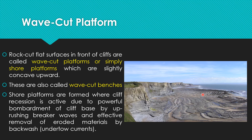The wave cut platform is formed as the cliff recedes. It is a compound effect — as the cliff recedes, uprushing breaking waves are effective, acting in the area and eroding materials which are removed by undertow and backwash currents.